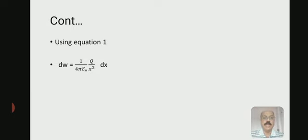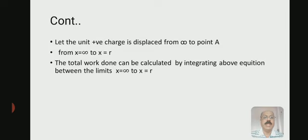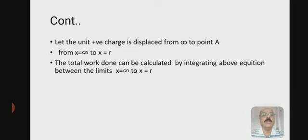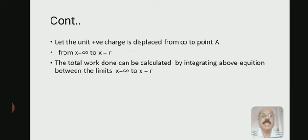Using the above equation we can write: dW = −(1 / 4πε₀) × (q / x²) × dx. Let the unit positive charge be displaced from infinity to a point A at distance r, as shown in the figure. The total work done can be calculated by integrating between the limits x = ∞ to x = r.